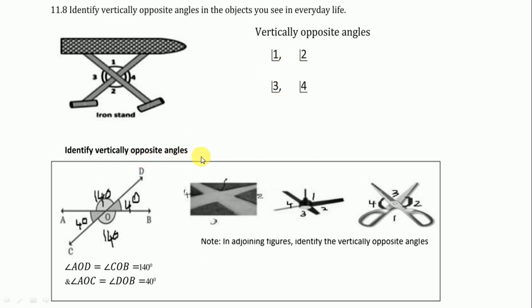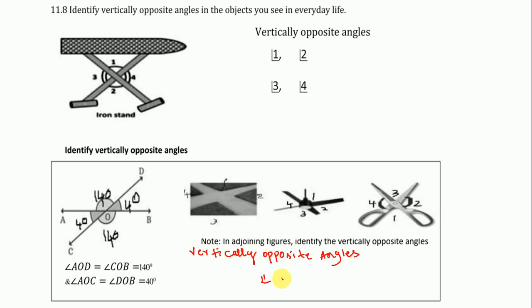Identify the vertical opposite angles. See here: 1 is vertically opposite to 3, and 4 is vertically opposite to 2. In all figures, 1 is opposite to 3 and 4 is opposite to 2. So we write: 1 is vertically opposite to 3, and 4 is vertically opposite to 2.